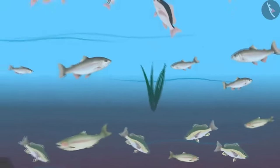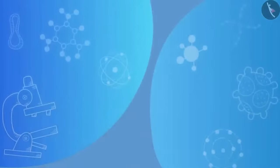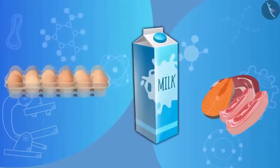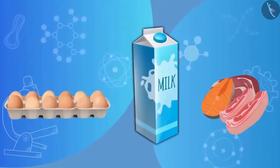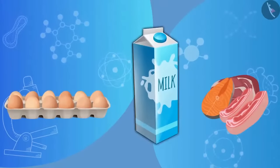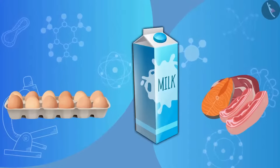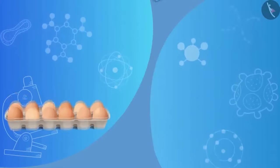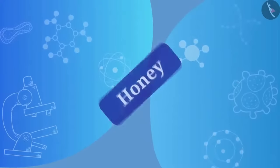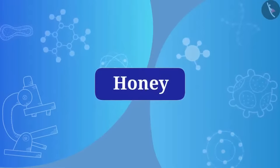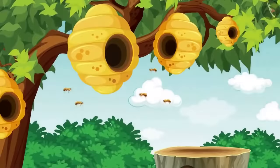So far, you have learned that we get meat, milk, and eggs from animals. Do we get anything else from them? Think about it. Friends, in addition to meat, milk, and eggs, we also get honey from animals. But where do we get honey? From bees.